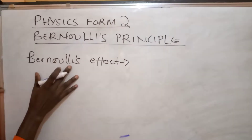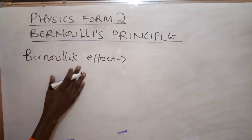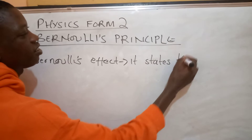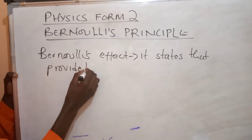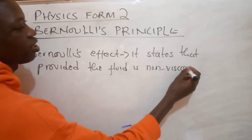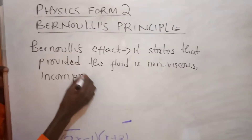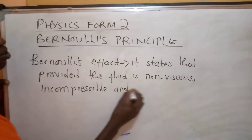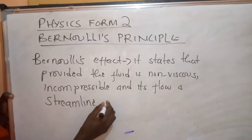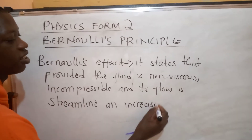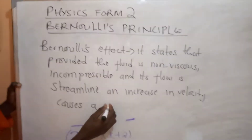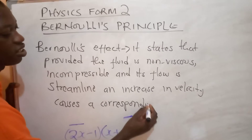Bernoulli's effect gives us three assumptions for a fluid in tube flow. It states that, provided the fluid is non-viscous, incompressible, and its flow is streamlined, an increase in velocity causes a corresponding decrease in pressure.